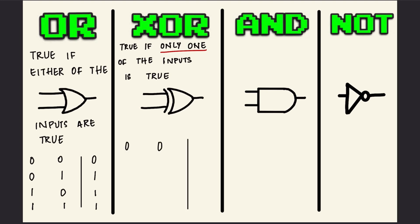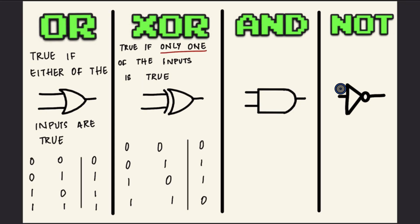0 XOR 0 is 0, 0 XOR 1 is 1, 1 XOR 0 is 1, and 1 XOR 1 is 0.